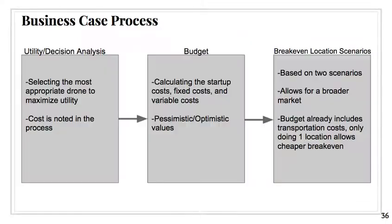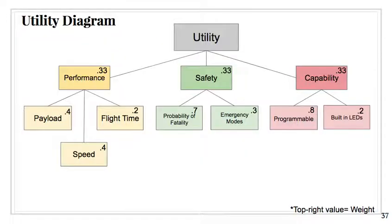Lastly, we had the business case. The business case was very important for our project because we're in the entertainment industry. Without the business case, we'd have nothing. The business case was divided into three main sections: the utility and decision analysis to pick a best drone, the budget, which is calculating the startup costs, fixed costs, and variable costs. And lastly, we had the break-even location scenarios to basically show that our product has a broad market and anything is possible for different scenarios.